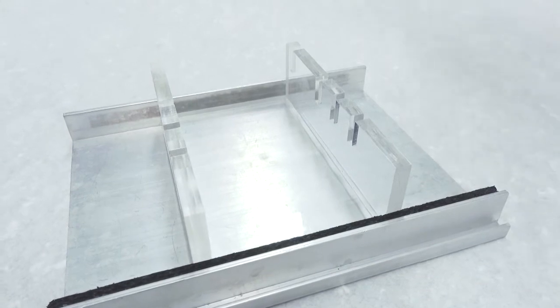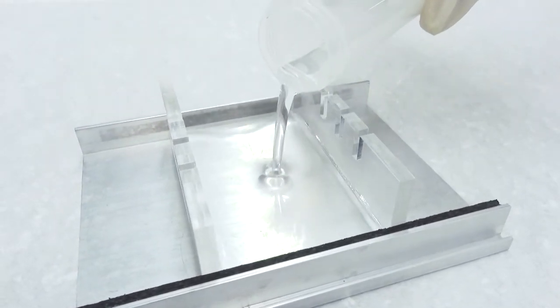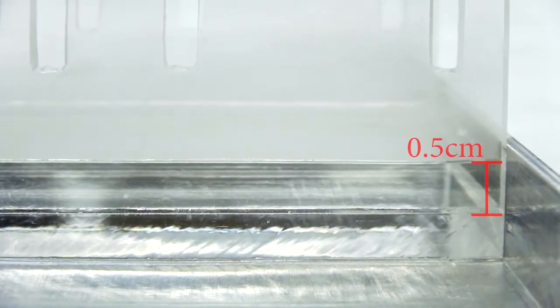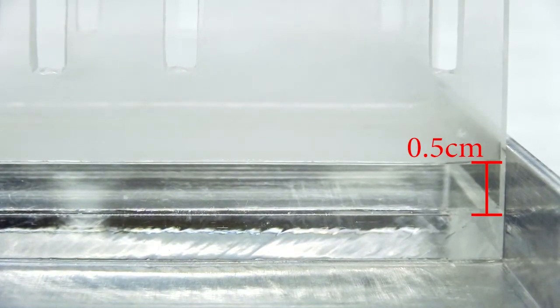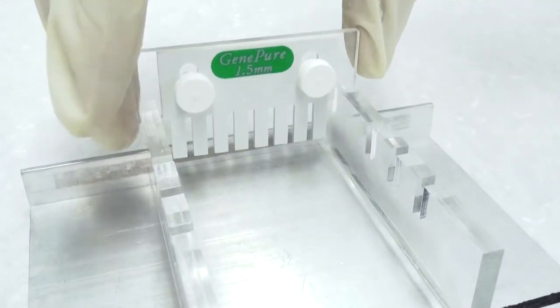Use a graduated tube to measure out the required volume of agarose solution. Pour the solution into the gel tray so that the gel reaches the 0.5 cm mark. Immediately set the comb into the first slot.